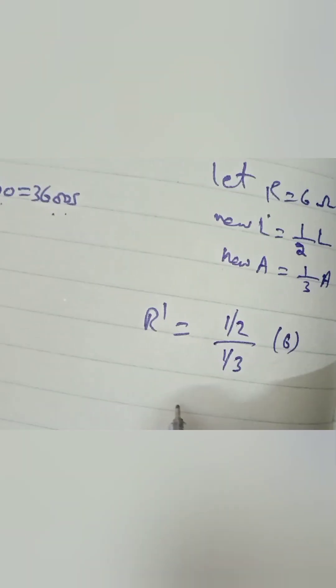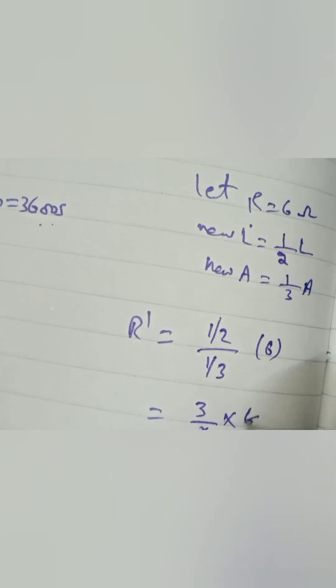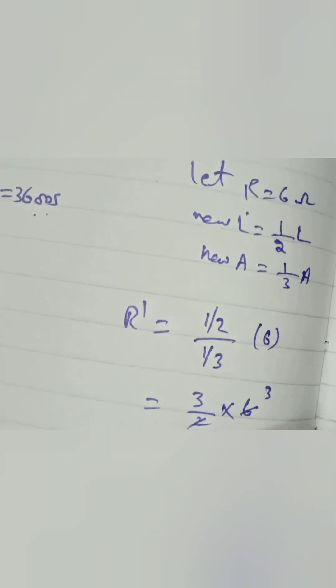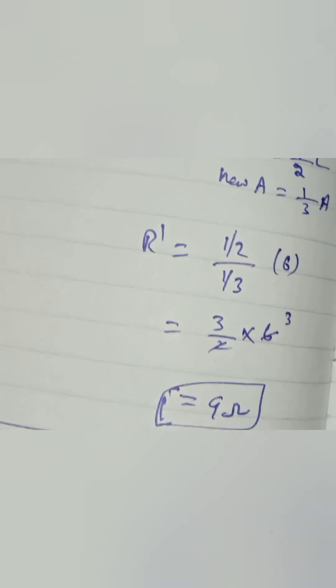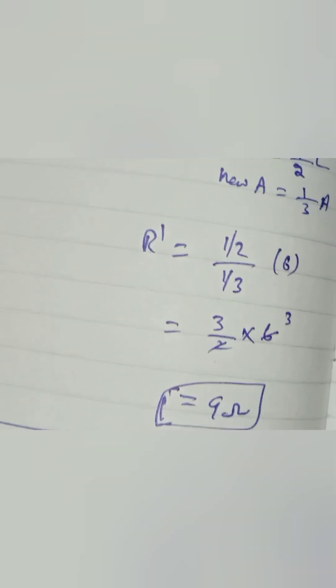So this becomes 3/2 × 6. You have come up with the answer now. So the new resistance here is also 9 ohms because we have decreased both the factors in the same dimension as we increased earlier.